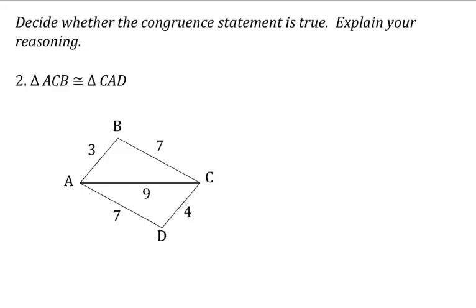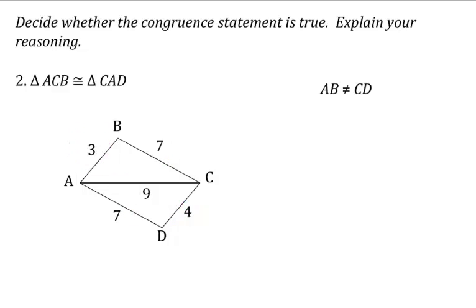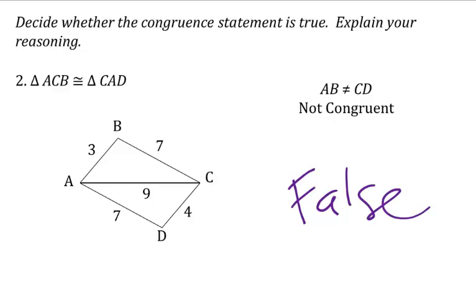Now let's look at another one: triangle ACB is congruent to triangle CAD. We see two sides marked as seven, which are congruent, and a nine in the middle that's reflexive. But on the outside we have a three and a four, so two of our sides are not congruent to each other. Since AB is not equal to CD, we can't say these triangles are congruent. So this is false.